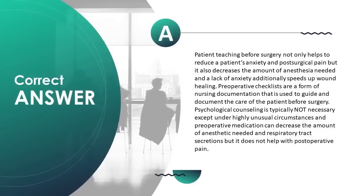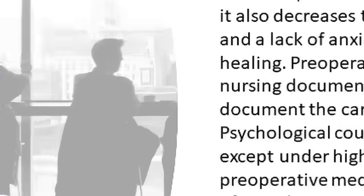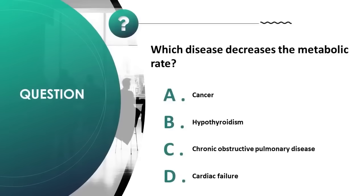Pre-operative checklists are nursing documentation used to guide and document care before surgery. Psychological counseling is typically not necessary except under highly unusual circumstances. Pre-operative medication can decrease the amount of anesthetic needed and respiratory tract secretions, but does not help with postoperative pain. Which disease decreases the metabolic rate? A) cancer, B) hypothyroidism, C) COPD, D) cardiac failure. Correct answer is B.